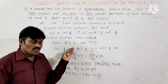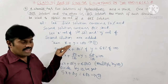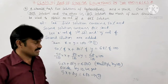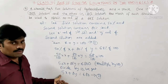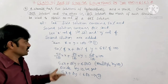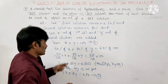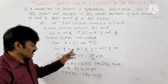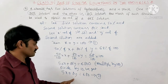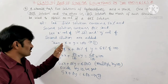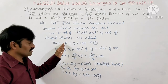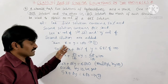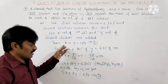We can use any one of the two methods — either the elimination method or the substitution method. Let's use the elimination method. To eliminate X, I observe the coefficients of X: in equation 1 it is 1, and in equation 2 it is 5. So I multiply equation 1 by 5.